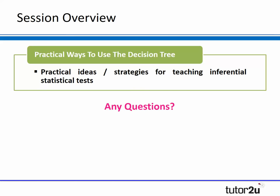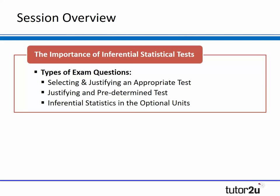So there we have it — four different activities: some really active ones, some more consolidation-style activities that give you a nice basis for teaching inferential stats and using the decision tree in lessons. Now, working backwards to highlight the importance of the decision tree and inferential stats, I would argue there are three different types of key questions that can be asked: select and justify an appropriate test; justify a predetermined test; and questions arising in the optional topics.